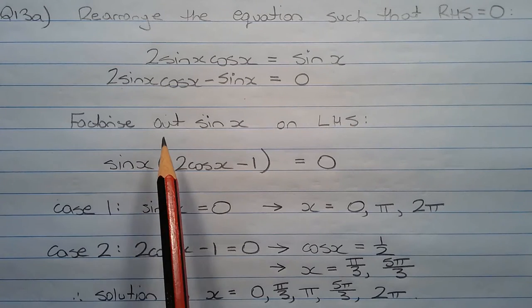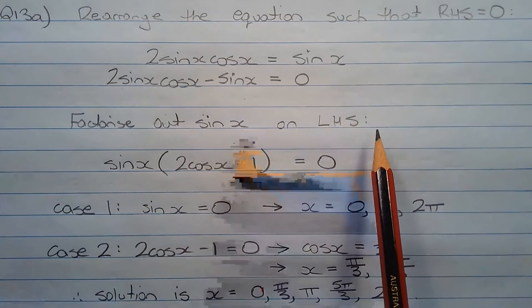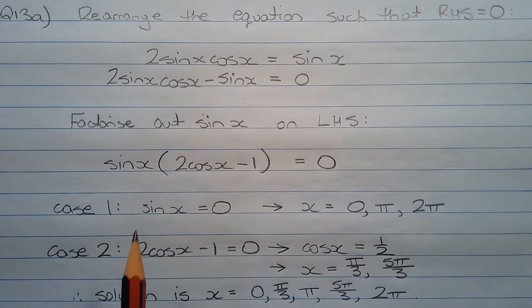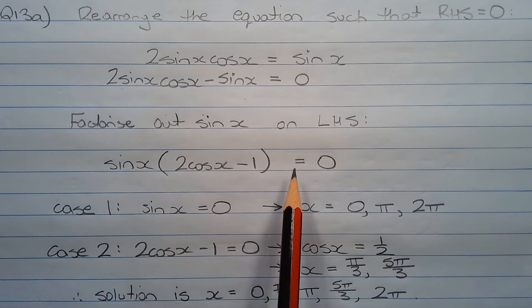The next step is to factorize out sine x on the left hand side. Taking out sine x from this term and this term, we have sine x multiplied by 2 cos x minus 1 equals 0.